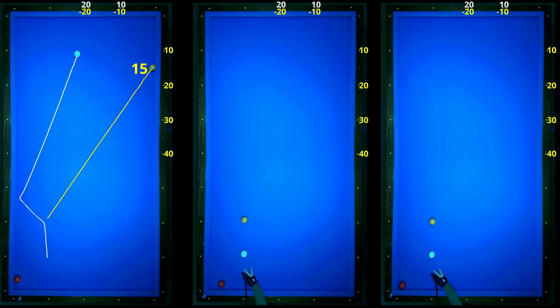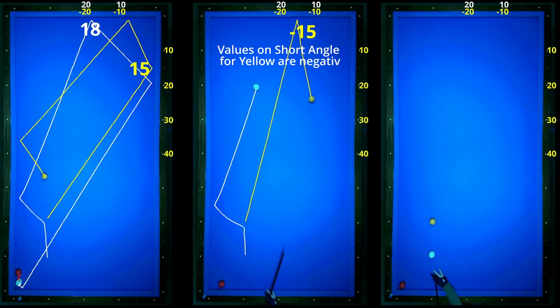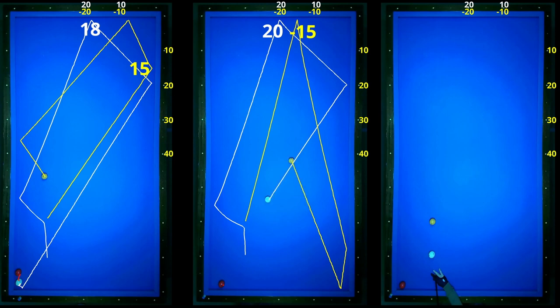I'll explain it briefly. The point where the white ball meets the short rail is counted as 0-10-20. The point where the yellow ball meets the first rail is also counted. The short rail should have negative values and the long rail positive values.